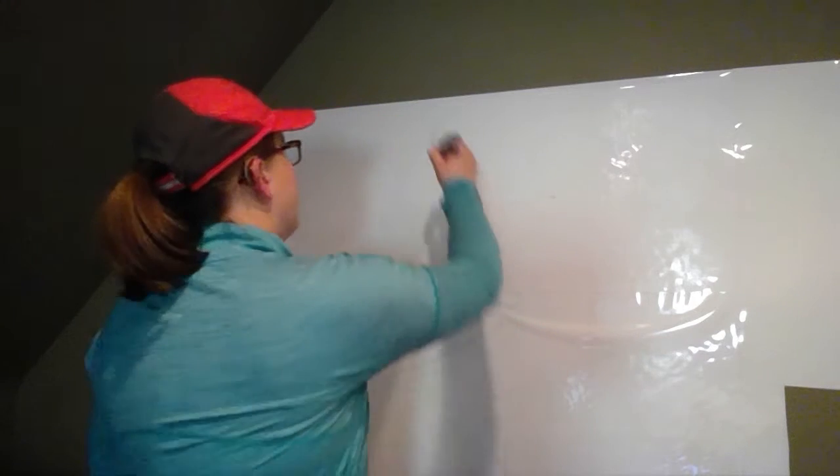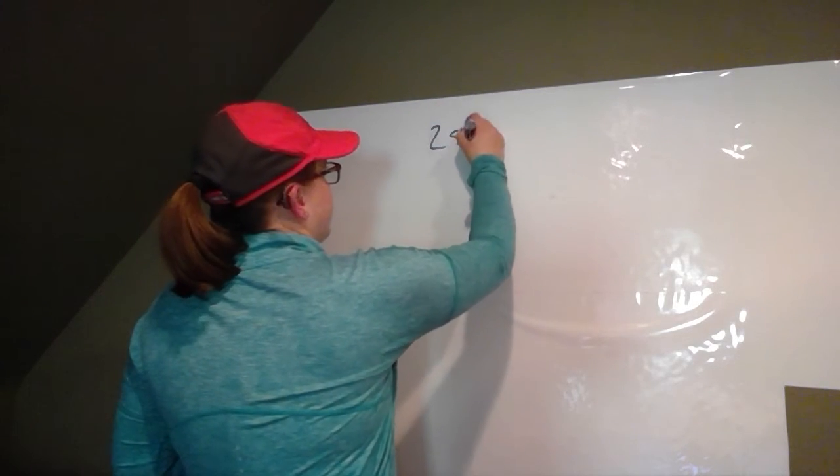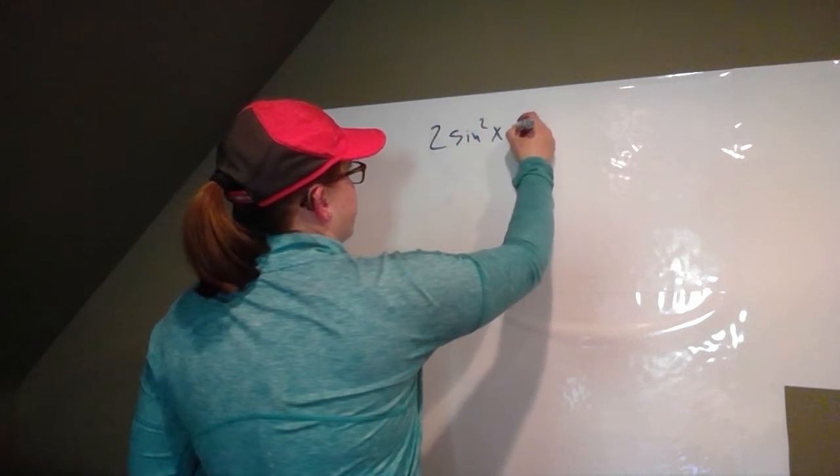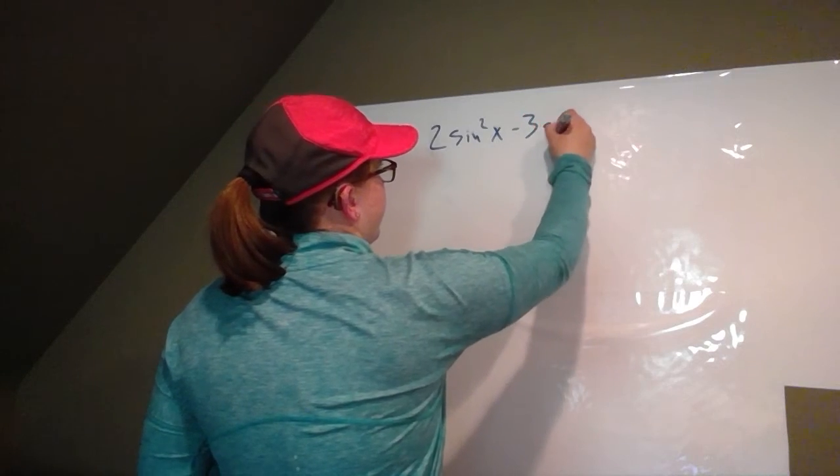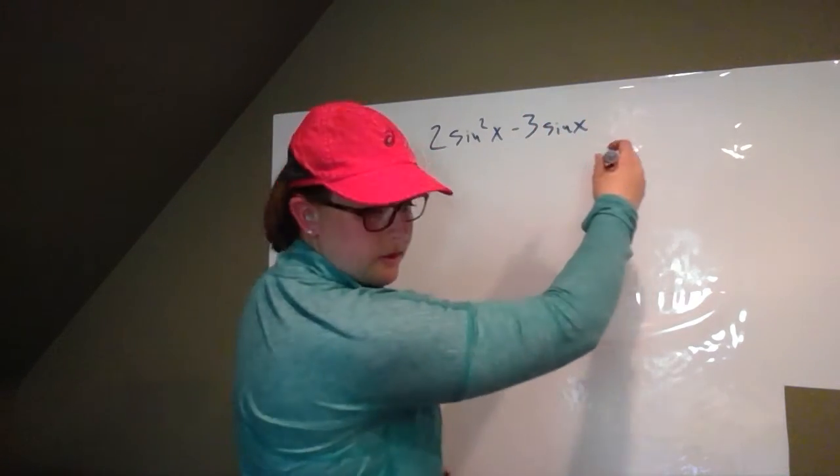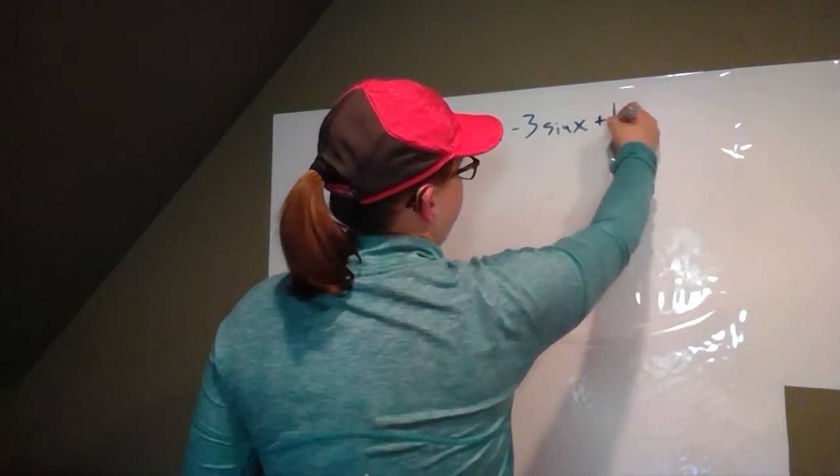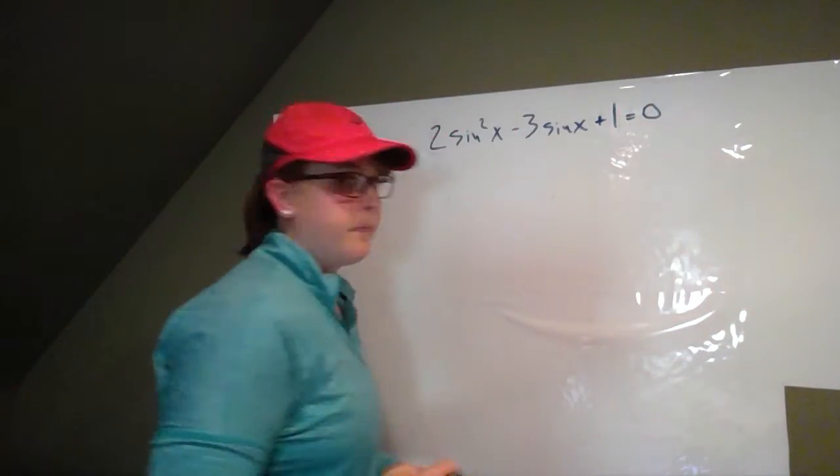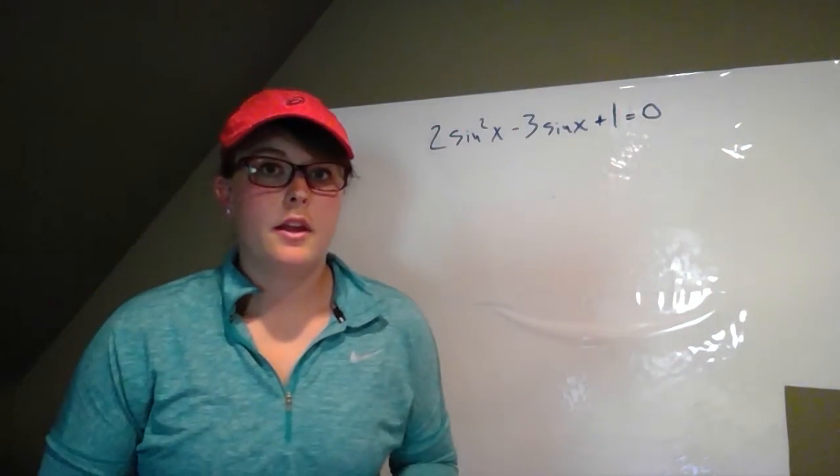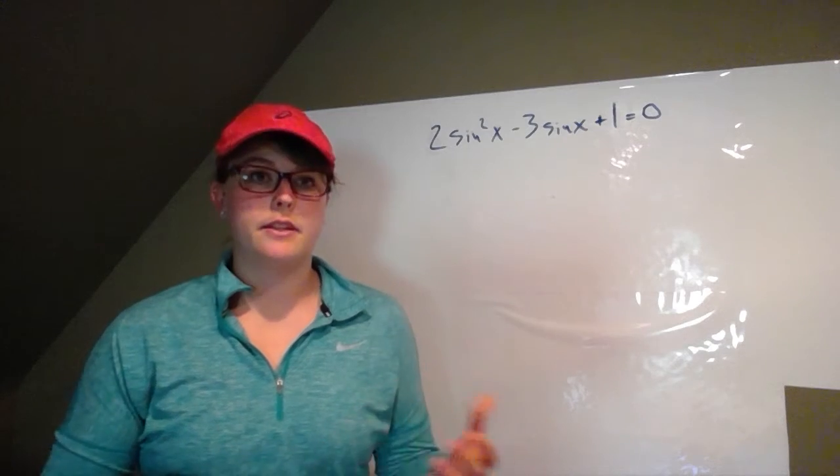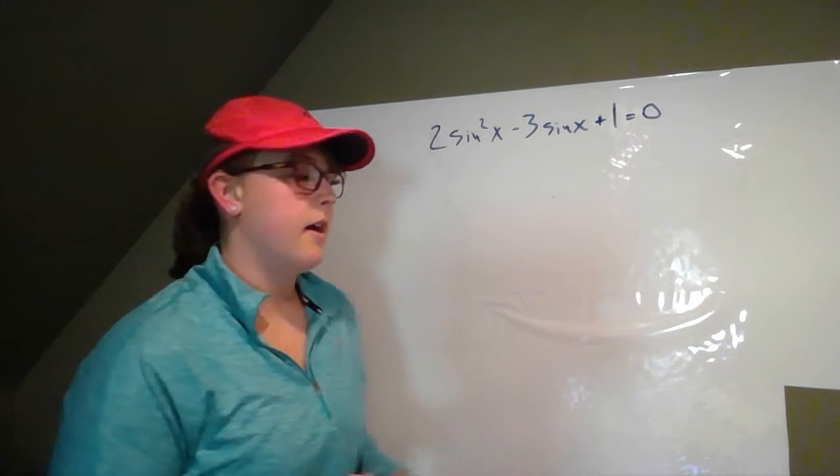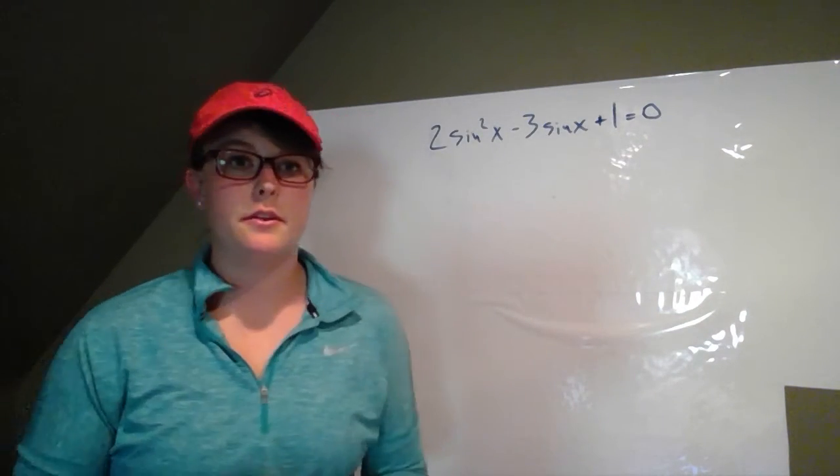So here we go. Two sine squared x minus three sine x plus one equals zero. The hint for this one is actually to use factoring of quadratics, which is what we're going to do.